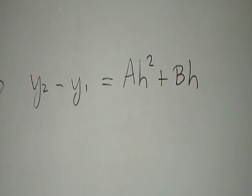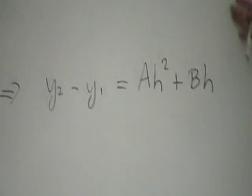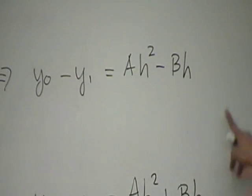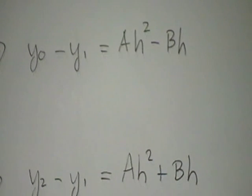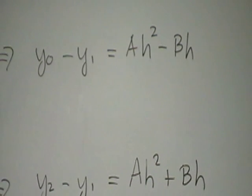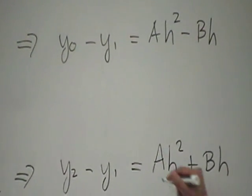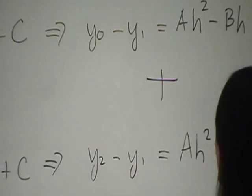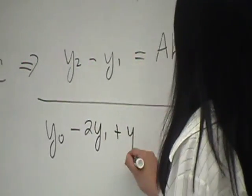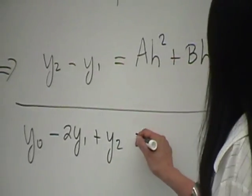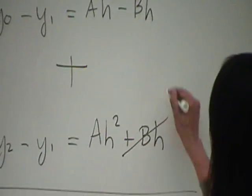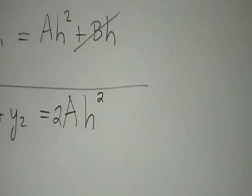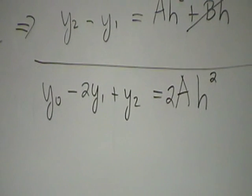The nice thing to do with these two equations is to add them. The bh terms cancel, and we get: y₀ − 2y₁ + y₂ = 2ah². So we can solve for a: 2ah² = y₀ − 2y₁ + y₂.